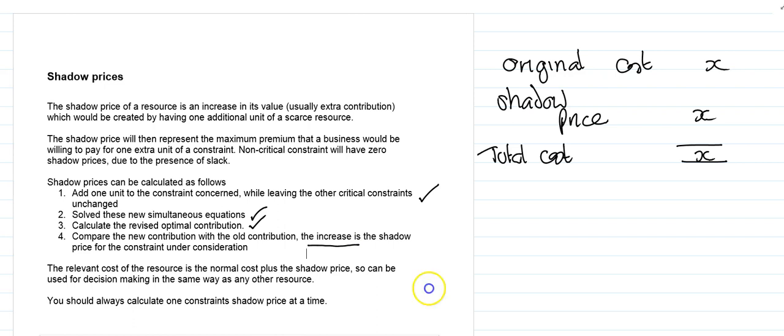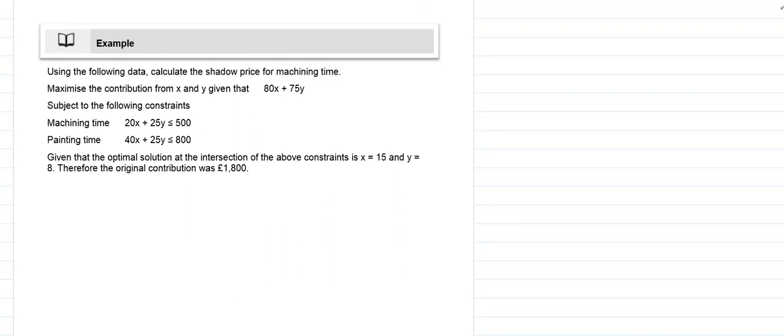Let's look at an example. Using this data, we're going to calculate the shadow price for machine time. We've got the objective function, and given that objective function and the solution to our linear programming problem, we have 80x plus 75y.